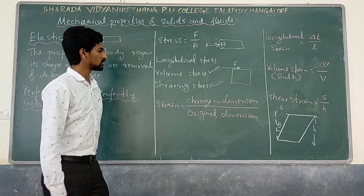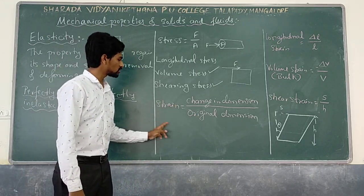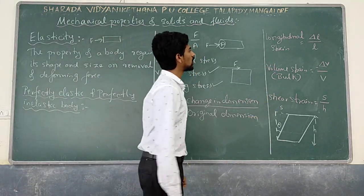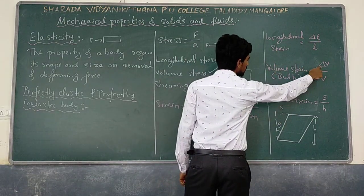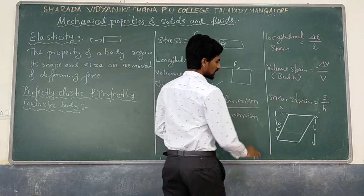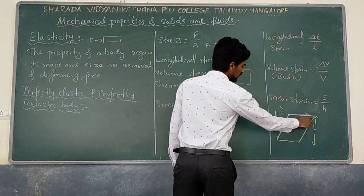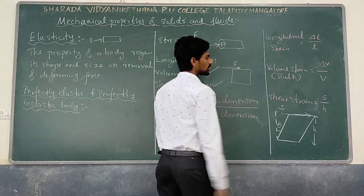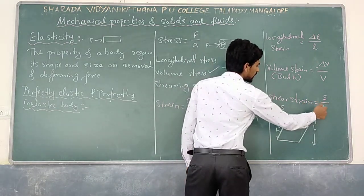Next is strain. Strain is defined as change in dimension divided by original dimension, and it has no dimensional formula. There are three types of strain. Longitudinal strain is change in length by original length. Volume strain is change in volume by original volume. Shear strain: when a tangential force is applied, the surface displaces through S, and H is the height of the surface — shear strain is defined as S by H.